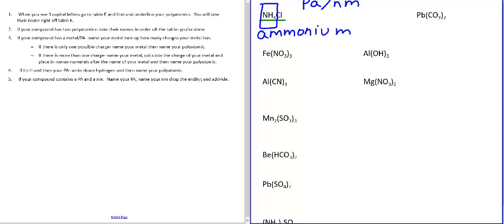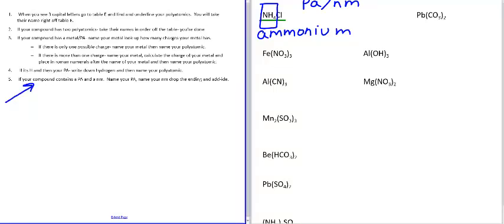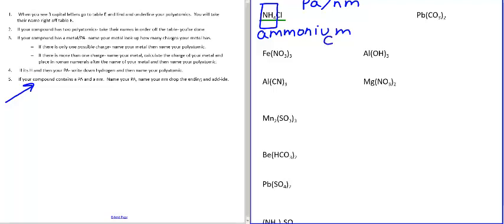When you see three capital letters, go to Table E and underline your polyatomics — take their name right off Table E. The name of NH4 from Table E is ammonium. If your compound contains two polyatomics, take both names off the table and you're done. If your compound contains a polyatomic and a non-metal, name your polyatomic, name your non-metal, drop the ending, and add -ide. So this is ammonium chloride.